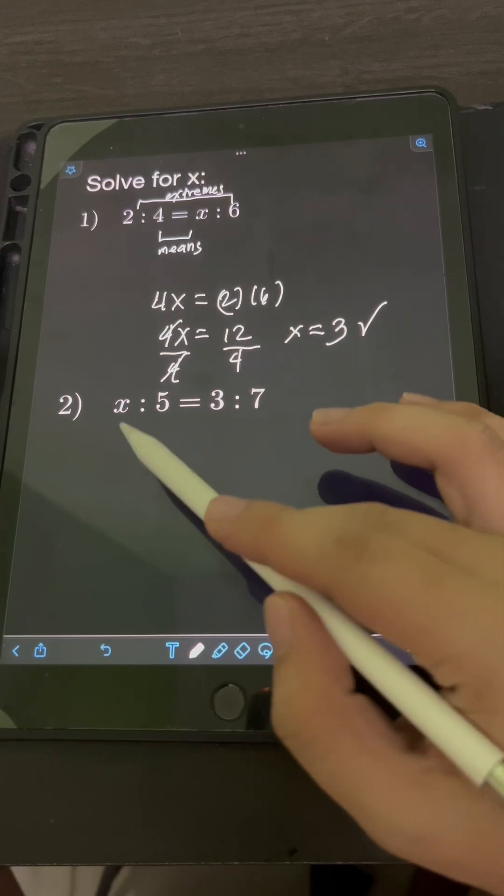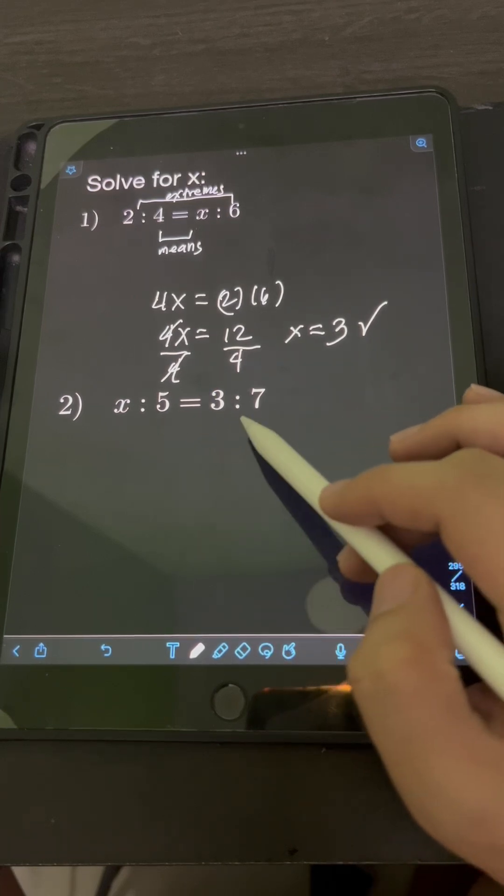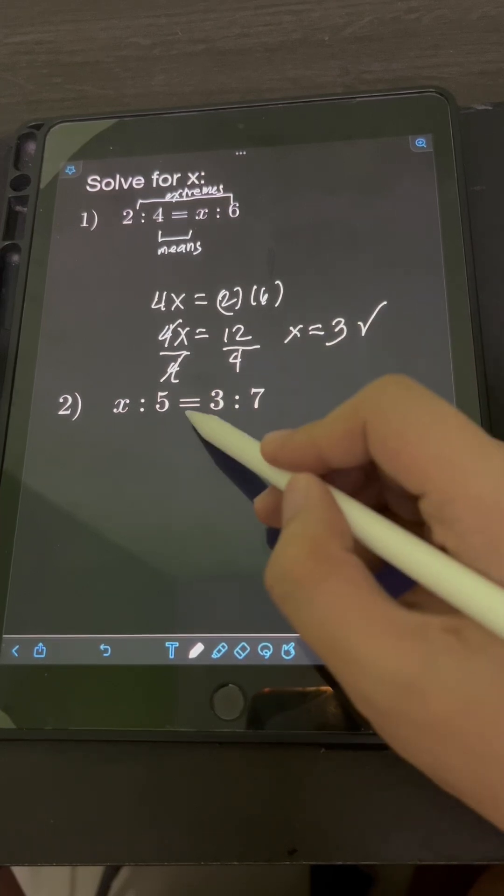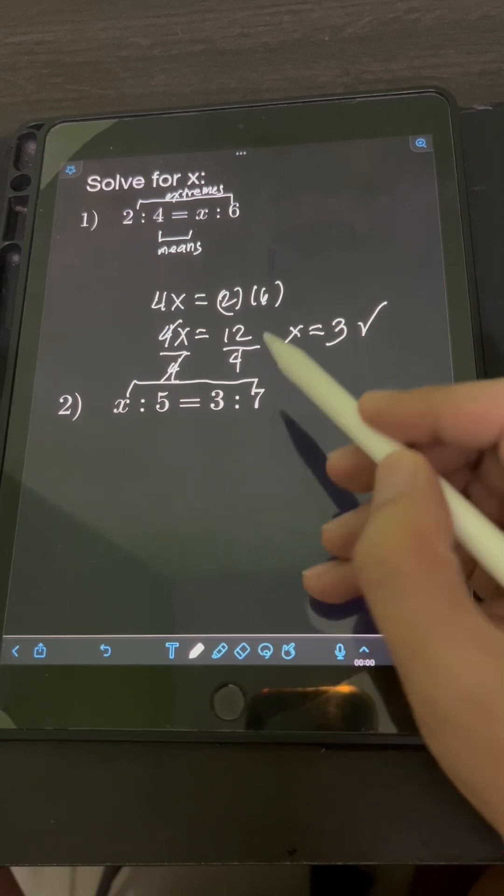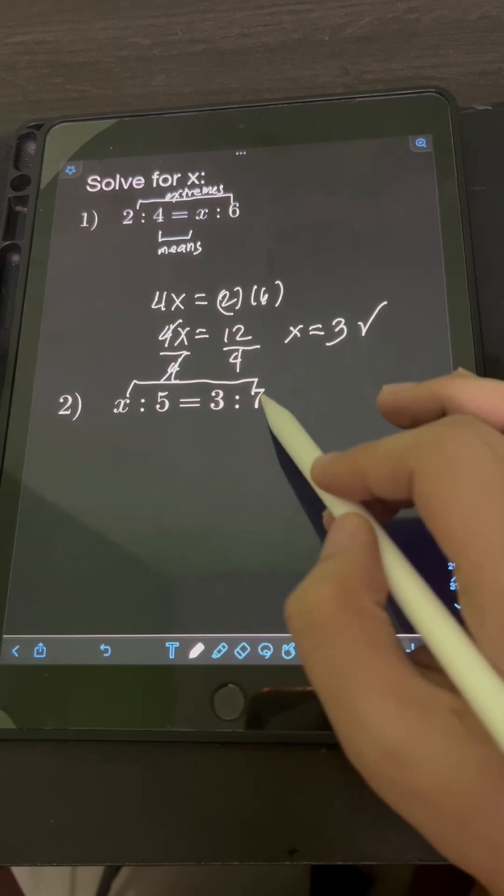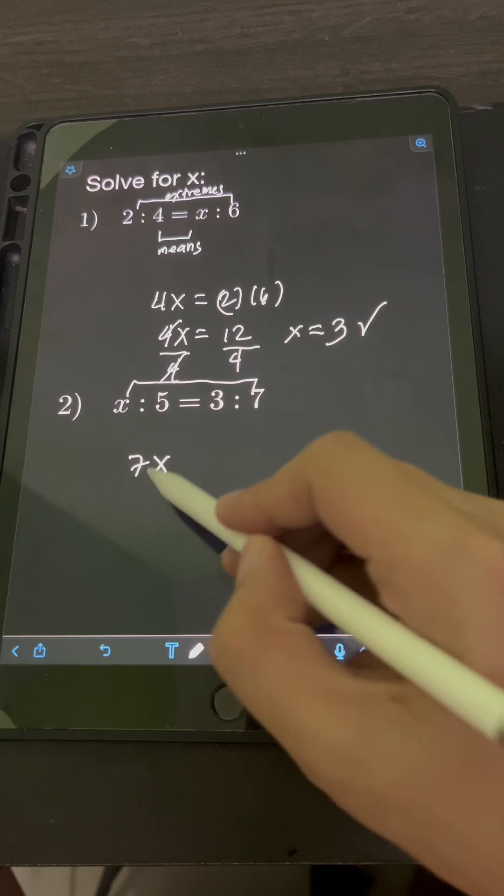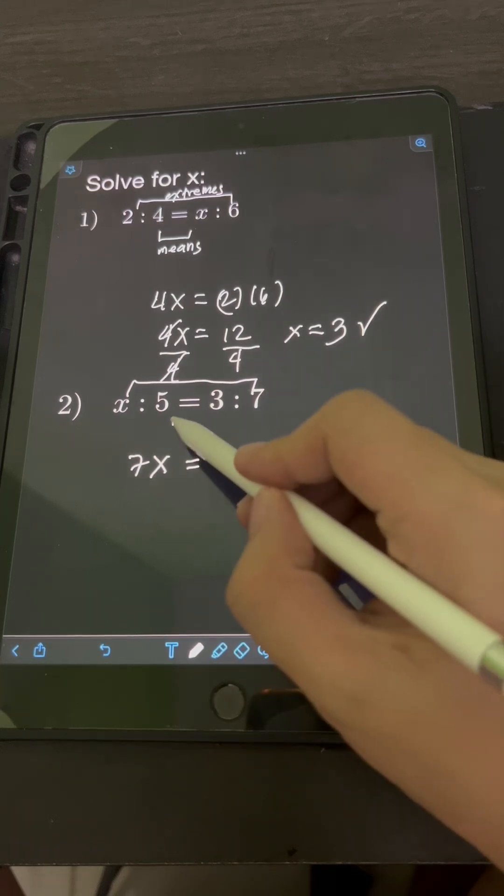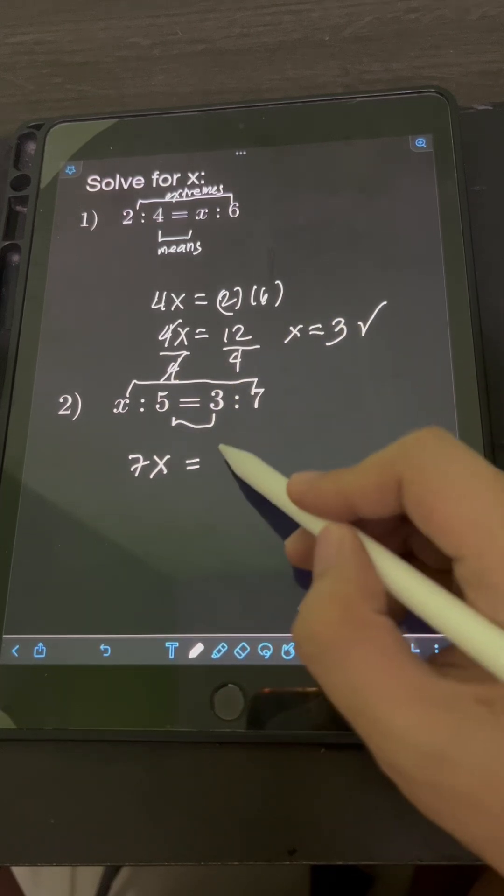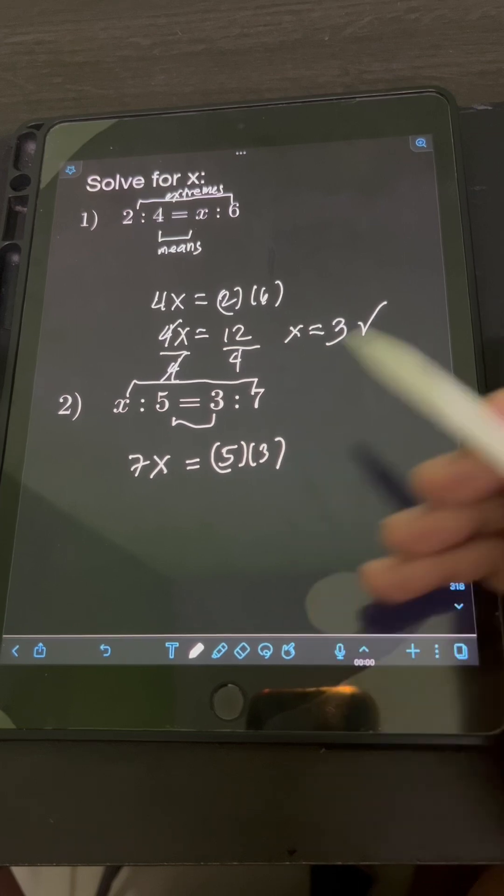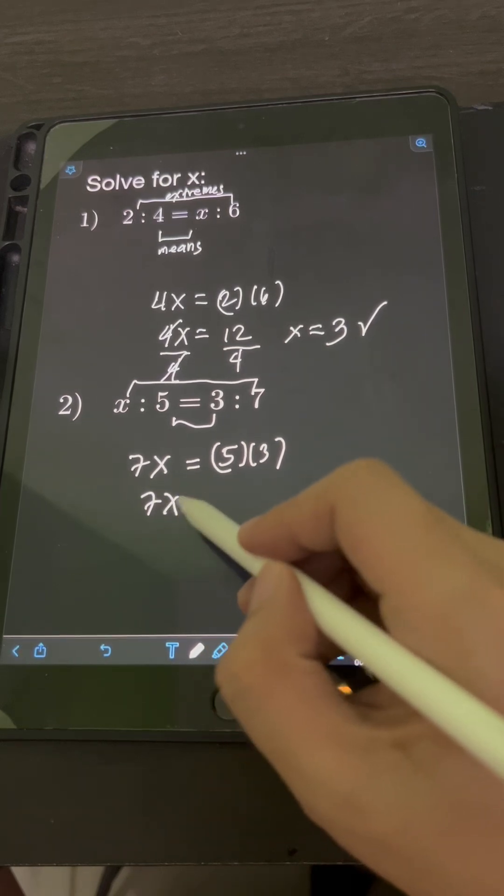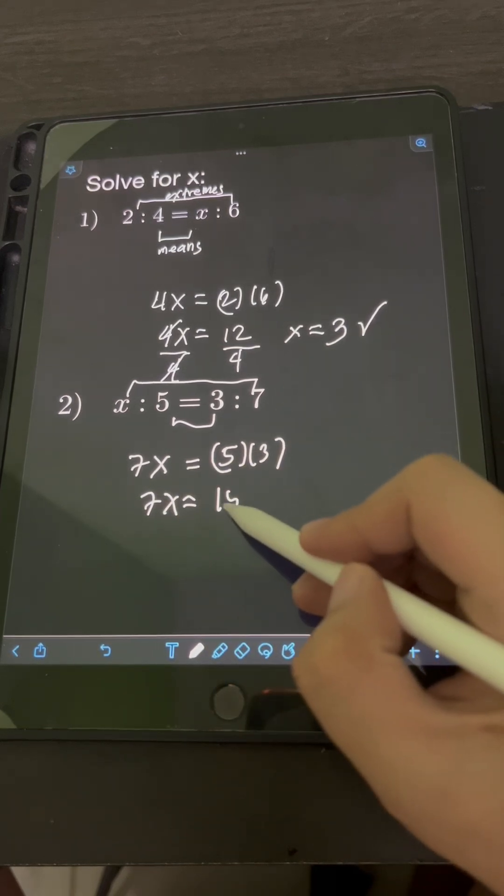For number 2, we have x is to 5 is equal to 3 is to 7. So likewise, we multiply the extremes x times 7 or 7 times x then equate it to the product of the means 5 times 3. So we have 7x is equal to 5 times 3 or 15.